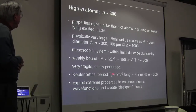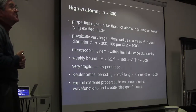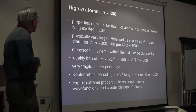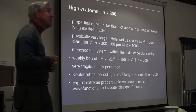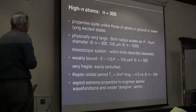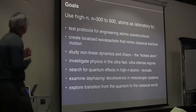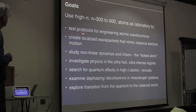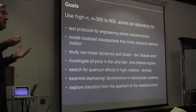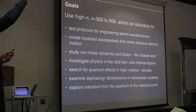Another property is that the Kepler orbital period scales as n cubed and becomes quite long. At n equals 300, the classical Kepler orbital period is about 4.2 nanoseconds. So one can apply perturbations to these atoms in the form of electric field pulses which are actually much less than the orbital period. We exploit these extreme properties of the atoms to engineer their atomic wave functions and create what we refer to as designer atoms.